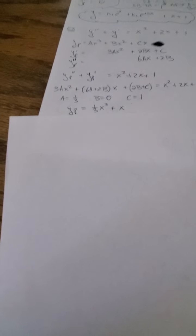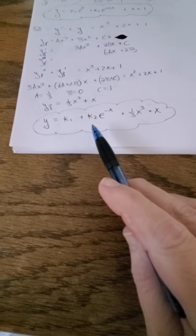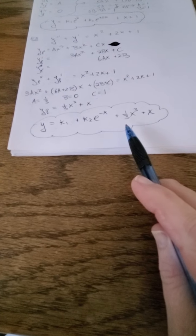And when I solve all that, I basically have 3 equations with 3 variables, and I wind up getting a equals 1 third, b equals 0, and c equals 1, which means yp is just going to be 1 third x to the third power plus x, which means our final total solution is going to be y equals k1 plus k2 e to the negative x plus 1 third x to the third power plus x.